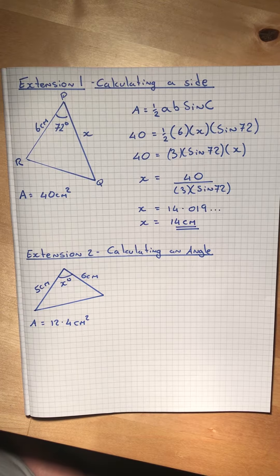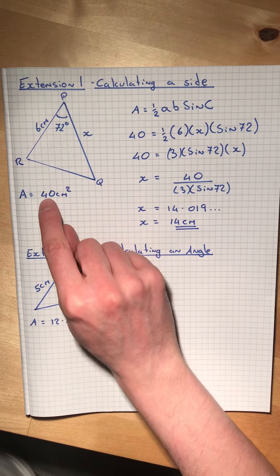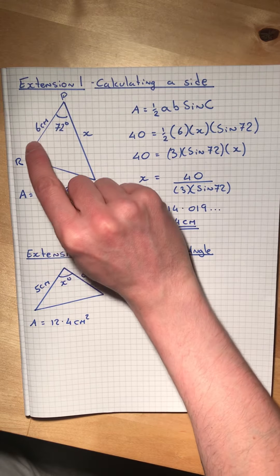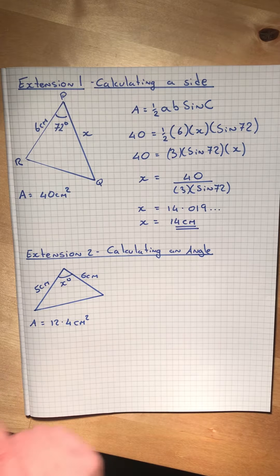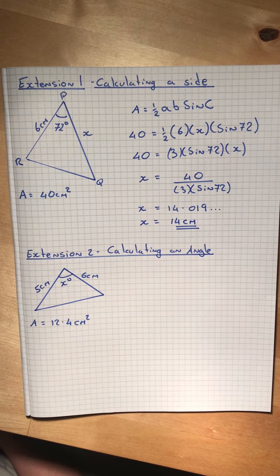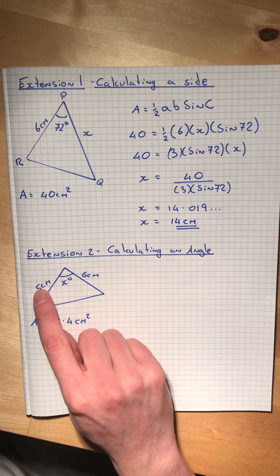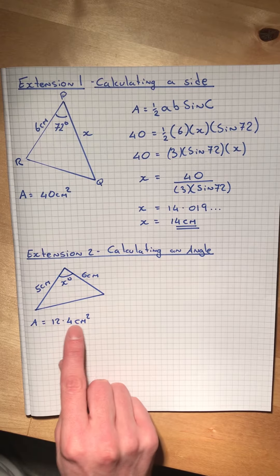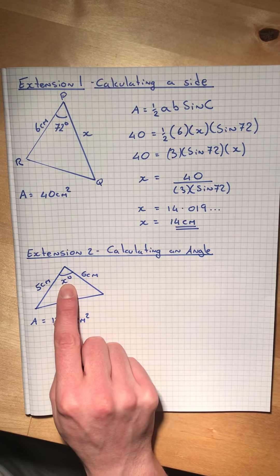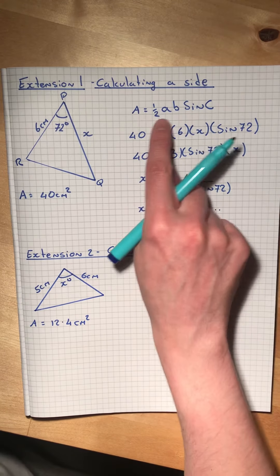So that was calculating the length of a side given the area, an angle, and another side. You see here for extension 2, we're calculating an angle. I've been given two sides, the area, and I want to calculate the angle. Still going to be the same formula.